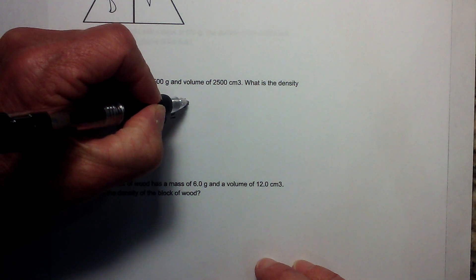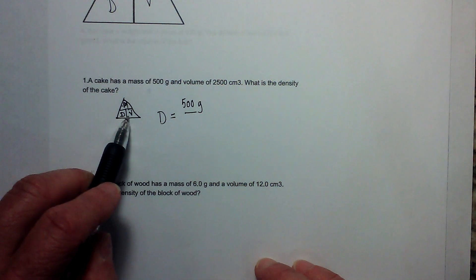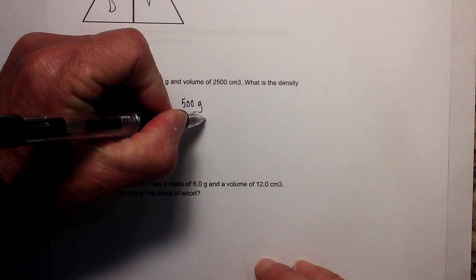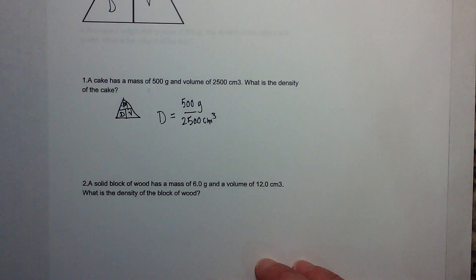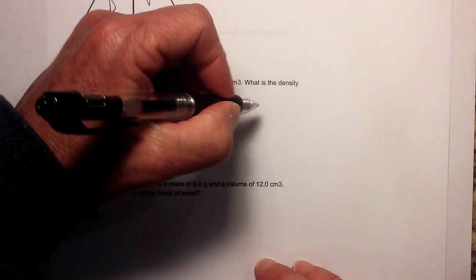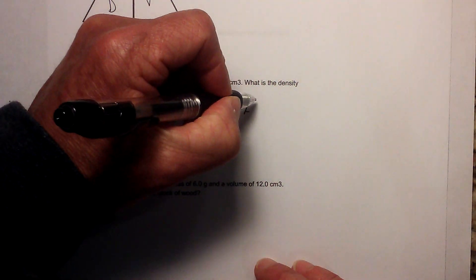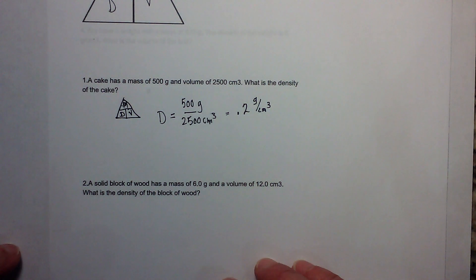The mass is here so it's going to go on top, 500 grams, and then volume, which is the V right here, is 2500 centimeters cubed. When you divide 500 by 2500 that equals 0.2, and you're left with grams per centimeters cubed. That's the first example of density.